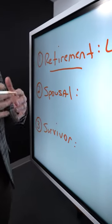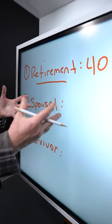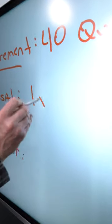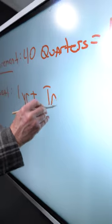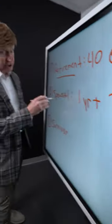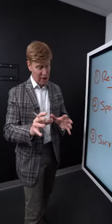Spousal benefits means I am not drawing on my own record, I'm drawing on a spouse that I'm married to. As long as you've been married to that spouse one year or more, and that spouse has to be taking their own Social Security before you can take their spousal benefit, but as long as they're taking, you qualify.